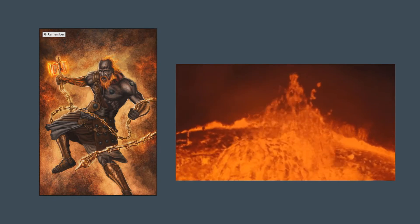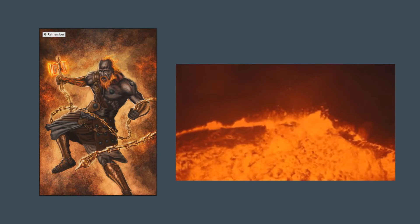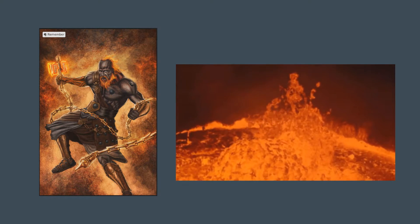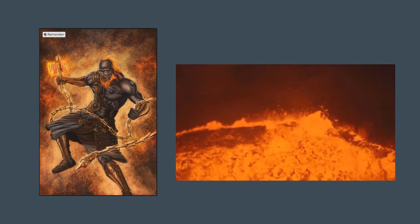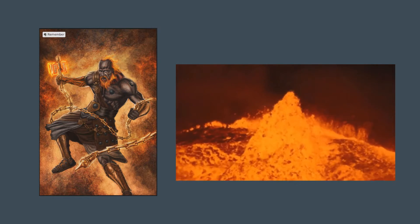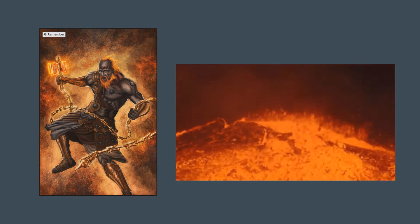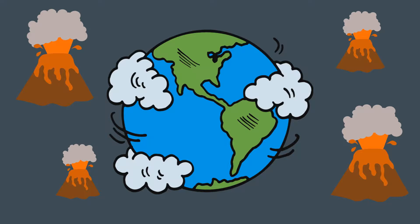Volcano has its origin from the name of Vulcan, a god of fire in Roman mythologies. Basically, a Volcano is a form of a mountain that allows the molten rock to erupt to the surface of the planet Earth.